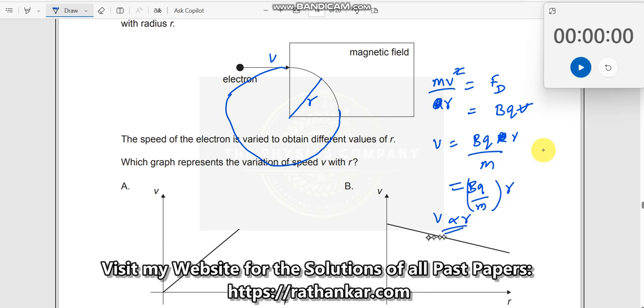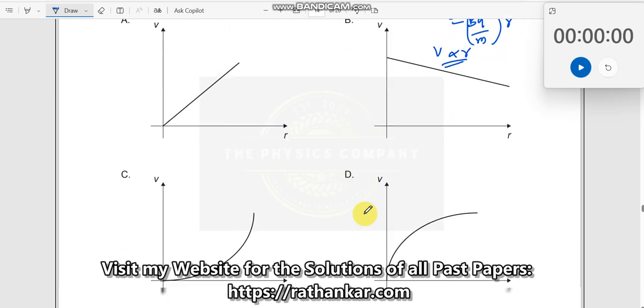In other words, v is proportional to r, which means it's a straight line passing through the origin. Therefore, A is the right answer.